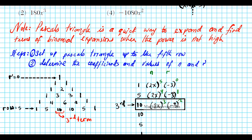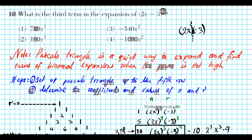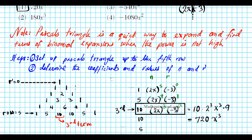Expanding the third term: 10 times (2x) to the third times (negative 3) squared. Two to the third is 8, and negative 3 squared is positive 9. Eight times 9 is 72, times 10 is 720. So the third term is 720x cubed. The answer is option number one. Remember: R always starts from zero and N starts from the power and descends.